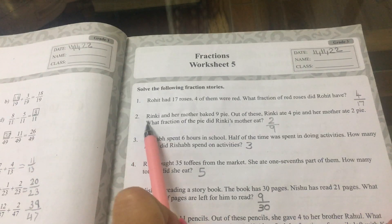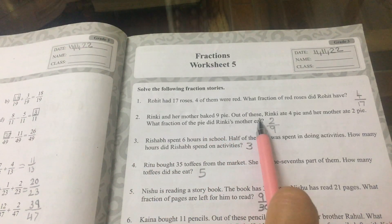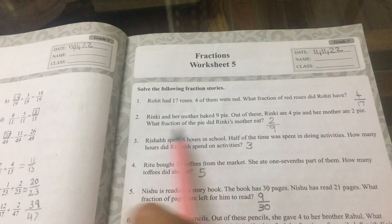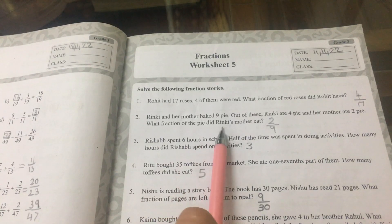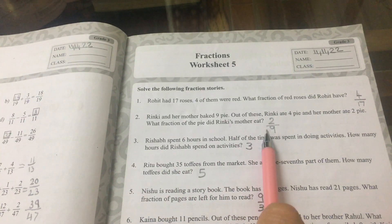Number 2. Rinkie and her mother baked 9 pies. Out of these, Rinkie ate 4 pies and her mother ate 2 pies. What fraction of the pie did Rinkie's mother eat? The fraction is 2 ninths.